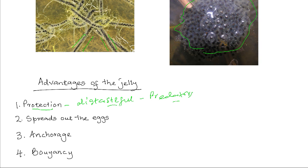Secondly, the jelly separates and spreads out the eggs, thus ensuring good aeration. Third, the jelly attaches the eggs to water plants to stop them from being swept away by water currents — in other words, the jelly anchors the eggs so that they are not carried away by the currents. Fourth, the jelly makes the eggs buoyant, which is good for aeration. When they stay on the surface, they get a good supply of oxygen for optimum growth of the embryo within.